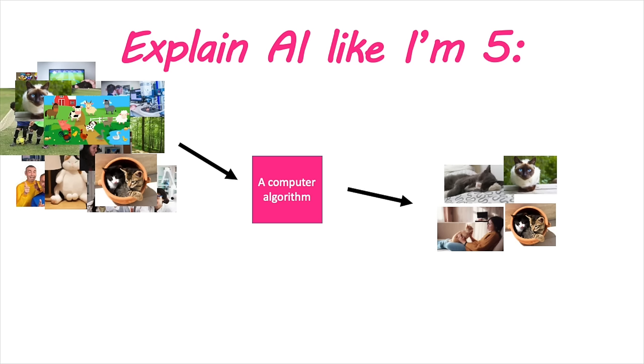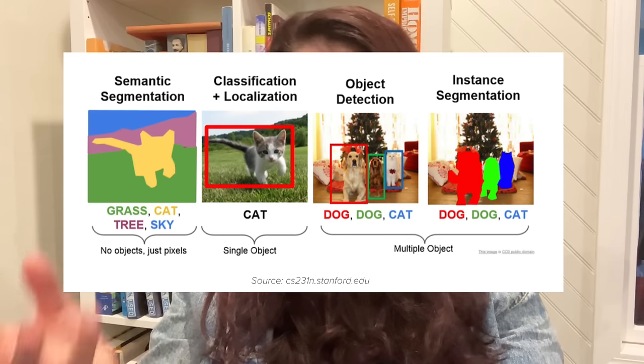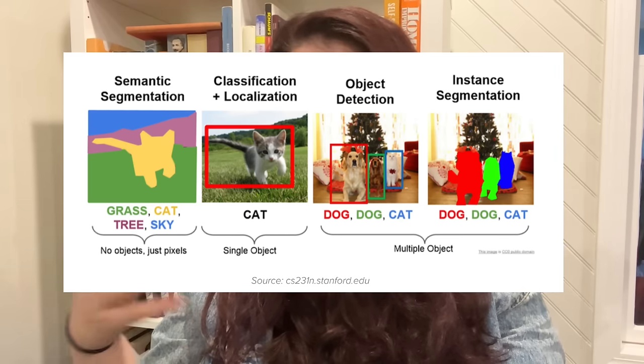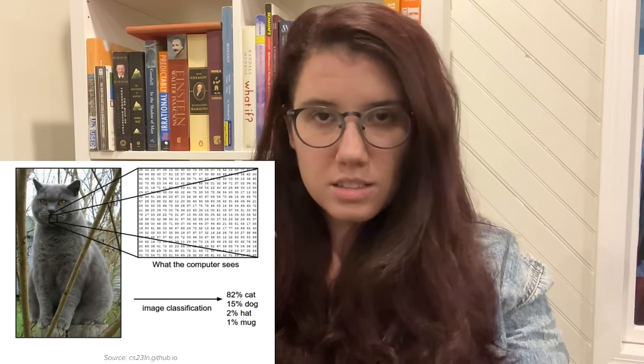Imagine you have 100,000 pictures of buildings, vehicles, nature, and animals, and you want all the pictures of cats. You can't look through 100,000 pictures — that would take too long. So you write a computer algorithm to sort through them. You take a subset of maybe 400 pictures, label 15 of them 'cat' and the rest 'not a cat,' and give that smaller dataset to the computer program. You say: teach yourself how to recognize the correct answer — look for patterns in the pictures of cats.